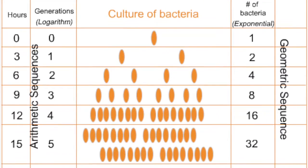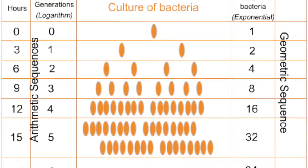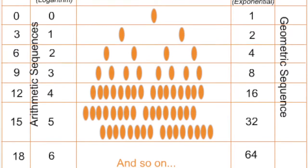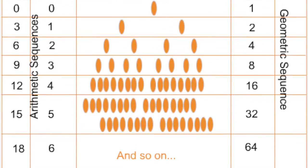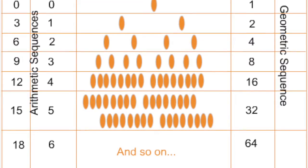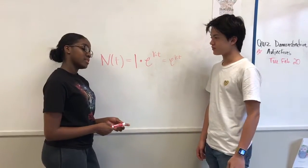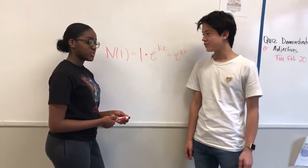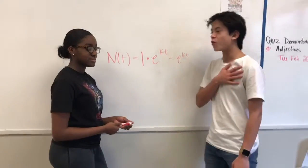Below is an example of what a culture of bacteria happens over time. However, it is the exponential and there's the arithmetic sequences as well as the geometric sequences. Do you get what I'm saying? Oh, cool. Do you understand exponentials? Of course I have the credentials.